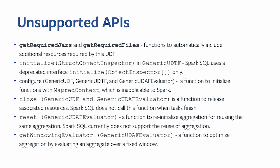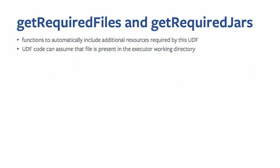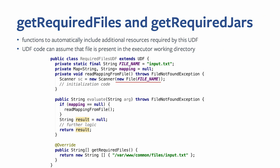What do those APIs do? These functions automatically include additional resources required by UDFs. As a result, UDF code executing on the executor side can assume that files are present in the executor's working directory. In a simple example UDF, inside the evaluate method which executes for every single row, there's initialization of a mapping that reads a file by simple filename. If that file is missing in the executor's working directory, this fails with a FileNotFoundException.